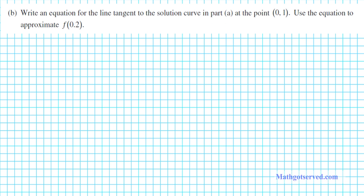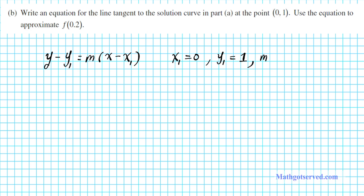Let's take a look at part B, which has two parts. We have to write the equation of the line tangent to the solution curve at the point (0, 1), and then use that equation to approximate f(0.2) — we're basically finding the linearization and then using it for a linear approximation. To write the equation of a tangent line, we'll use the point-slope form from Algebra: y minus y₁ equals m times (x minus x₁). We know x₁ is 0 and y₁ is 1, and we need the slope m.